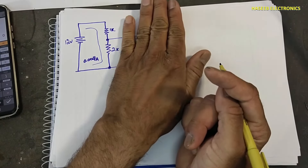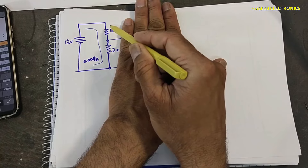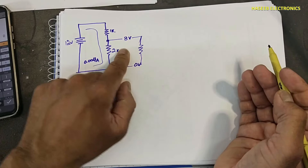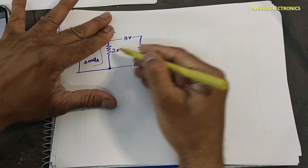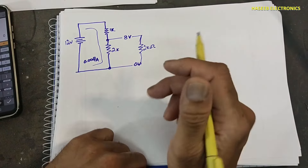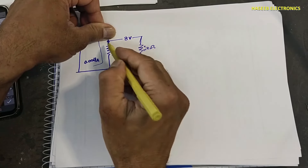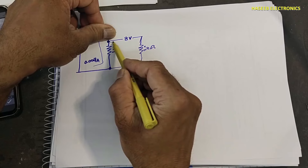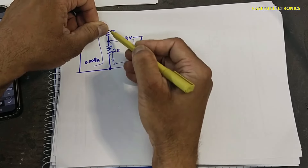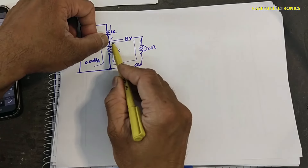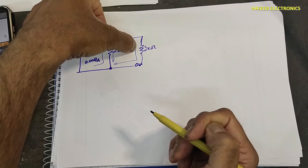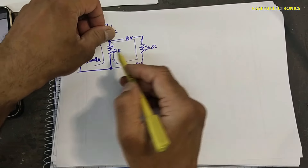When this resistor was not connected, we had only 1k and 2k resistors. But now another resistor is in the circuit. For example, let's consider it is 2 kilo-ohms. Now the current path from this node will be divided into two sections — maximum current flows in then splits into two lines. Let's calculate this portion.